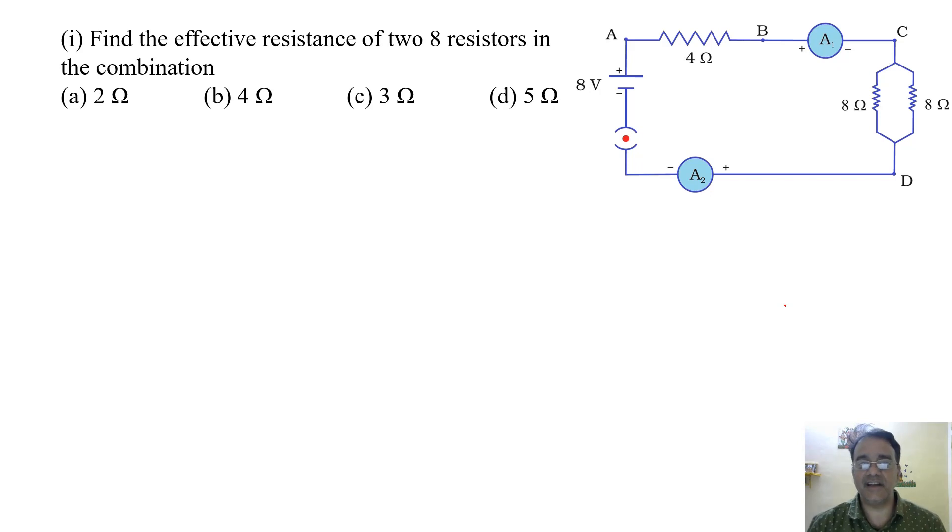So the first question is find the effective resistance of two 8Ω resistors in the combination. Now these two resistances are connected in parallel. The formula for two resistances in parallel is R1 into R2 upon R1 plus R2. Otherwise you can use 1 upon R equals 1 upon R1 plus 1 upon R2. So I am going to use this formula. So 8 into 8 upon 8 plus 8. So 64 upon 16 that equals 4 ohm. So the correct option is B.